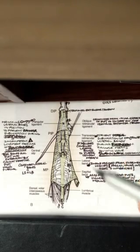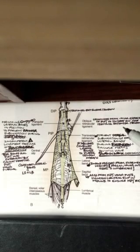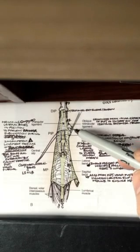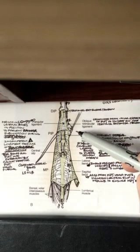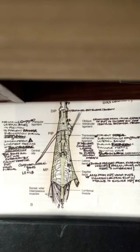The oblique retinacular, or sometimes called Landsmere ligament, comes from the volar plate of the PIP joint. It goes all the way to insert on the terminal extensor tendon, and it helps to stabilize this tendon so that the DIP joint and the PIP joint act in concert together.